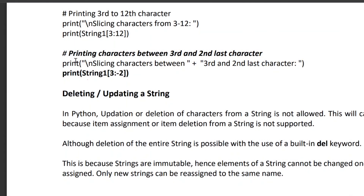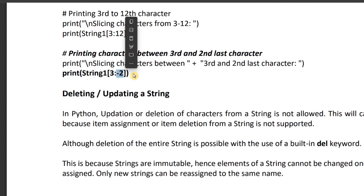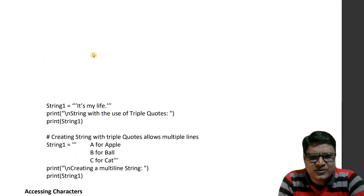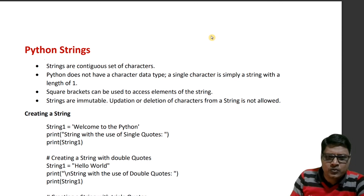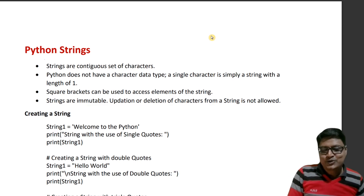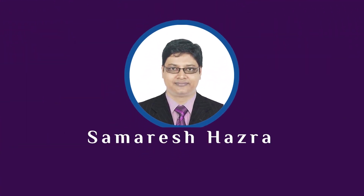An important use case is printing characters between the 3rd and 2nd last characters using slicing with a start index of 3. That's all for strings. In the next video we will cover Python lists. Thank you.